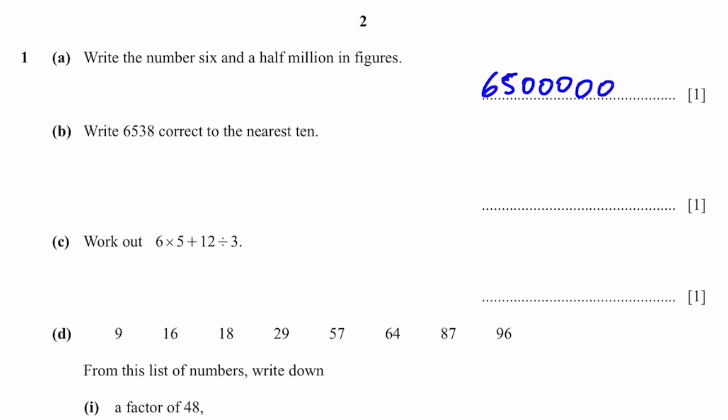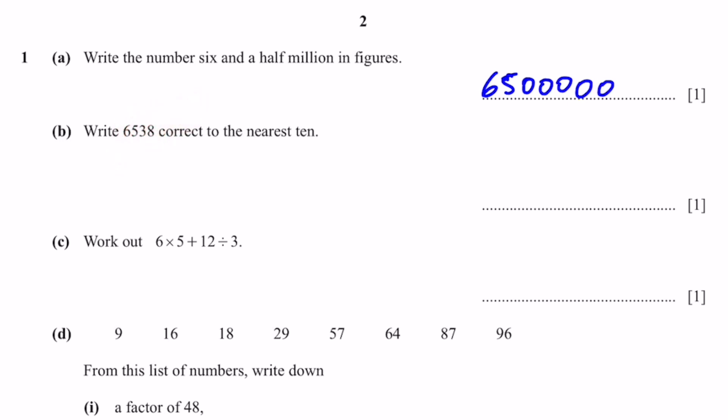Part B: Write 6,538 correct to the nearest 10. The tens digit is 3. The next digit is 8, which is greater than 5. So we add 1 to the tens digit, giving 6,540.